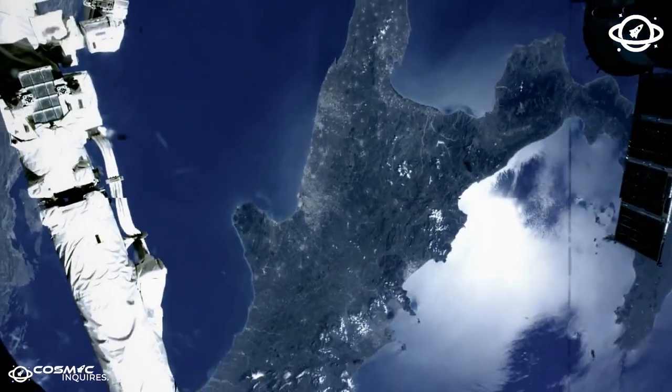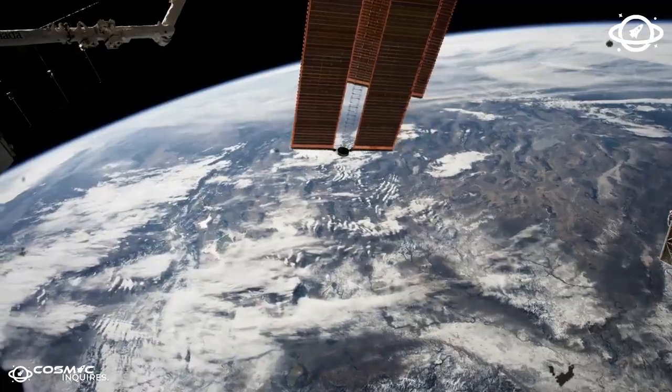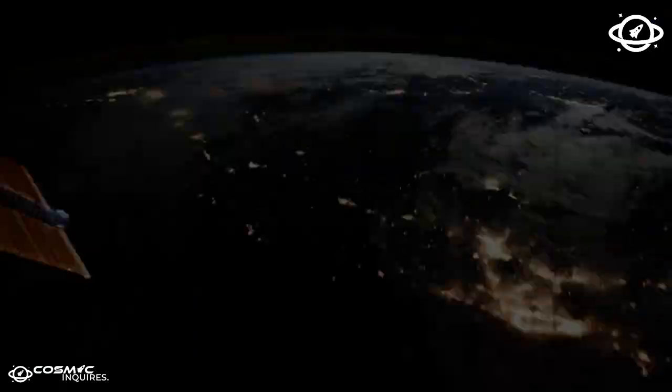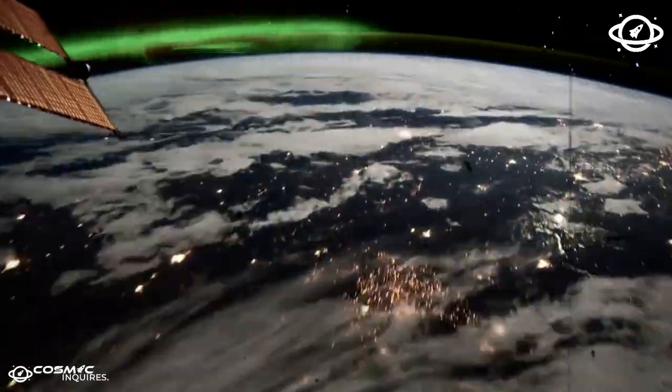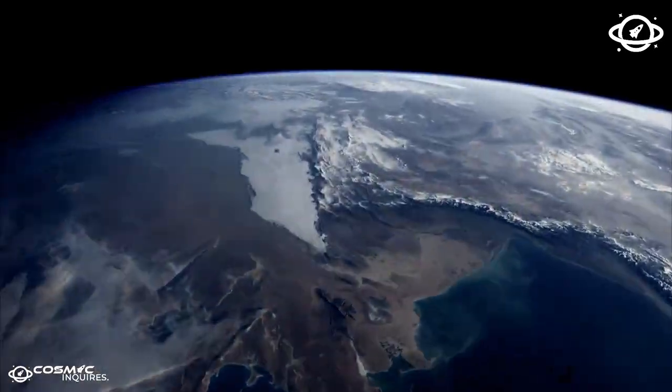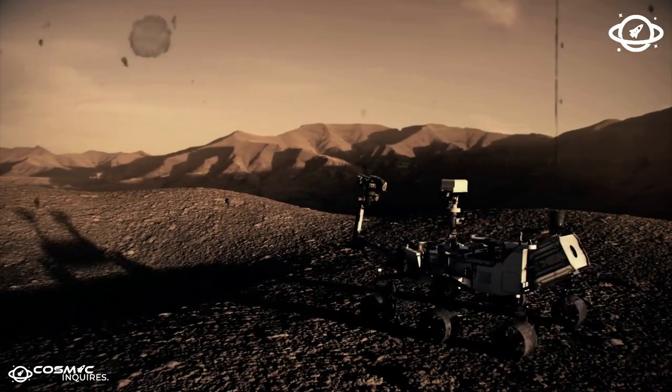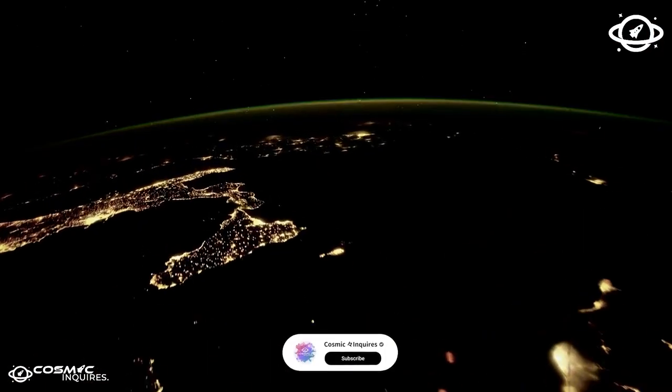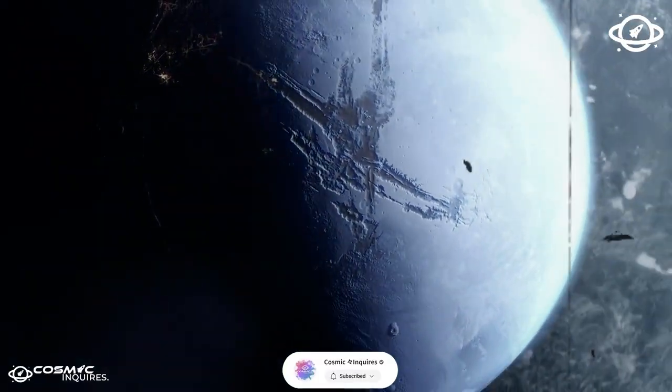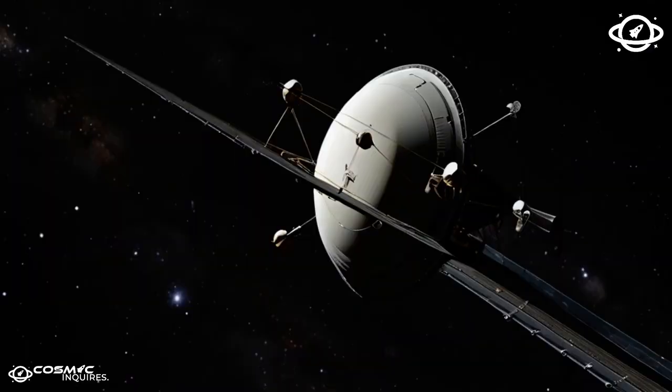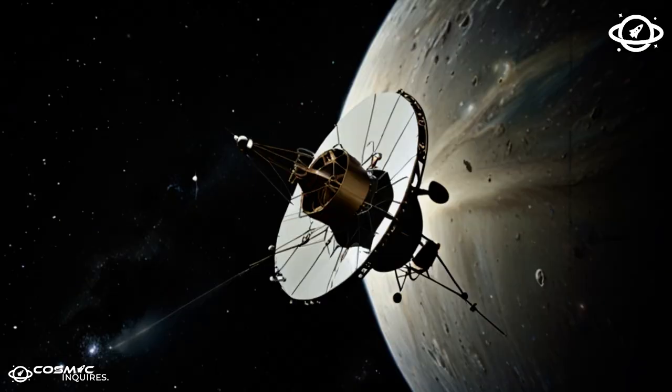This isn't science fiction, it's happening. Using its upcoming Long March 9 heavy lift rockets, China will assemble a 1 km wide solar array in geostationary orbit, beaming continuous energy back to Earth via microwaves.